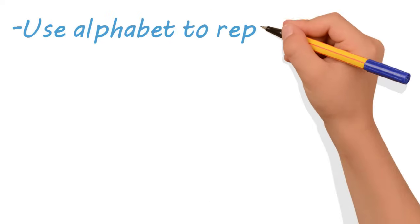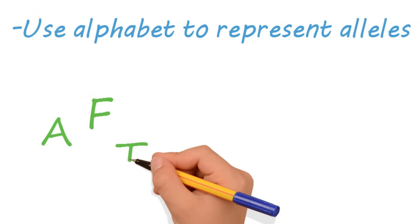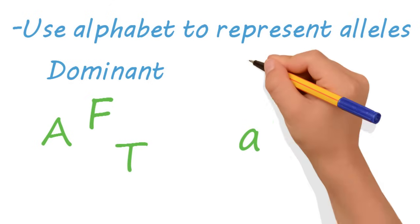We often show this relationship using the alphabet. Uppercase letters refer to a dominant allele, while lowercase letters refer to the recessive allele.